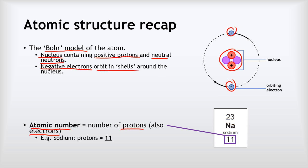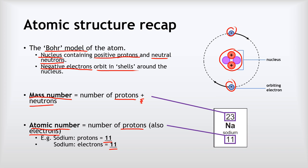In this case, sodium has got 11 protons, because the atomic number is 11, and also 11 electrons for the same reason. Now the top number, the bigger number, is called the mass number, and that is the number of protons plus the number of neutrons. To find out the number of neutrons, we do a little calculation. We take the mass number and we subtract the atomic number from it. So in this case, 23 take away 11, and that leaves us with 12 neutrons.